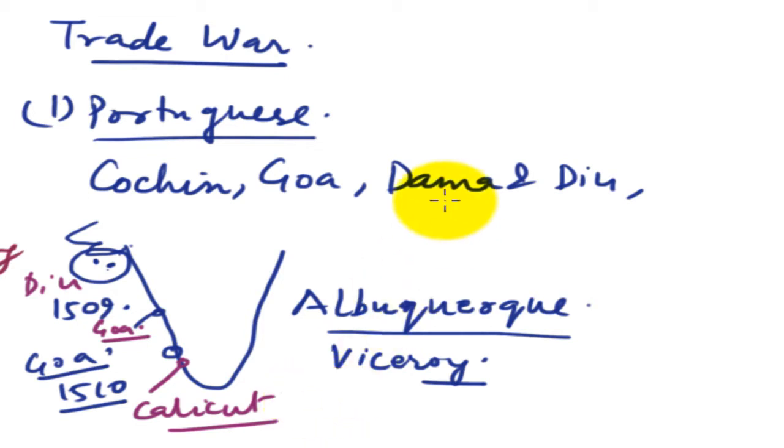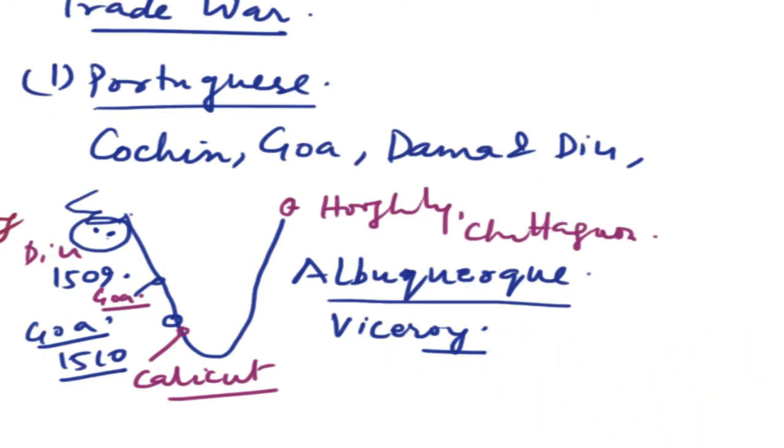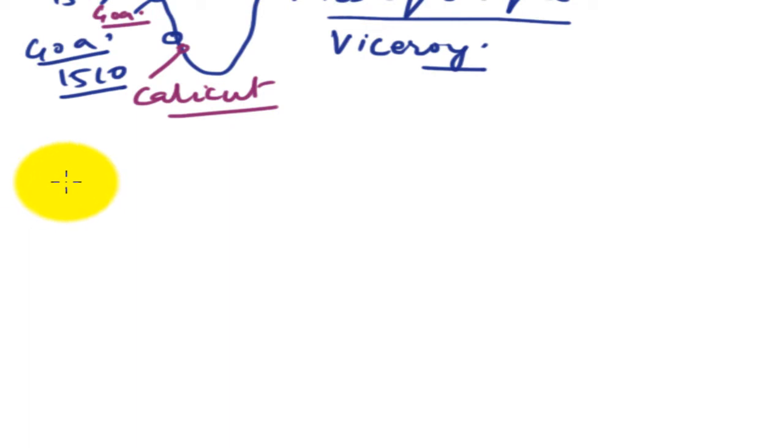They captured Calicut. Besides, they established control over Hooghly also. Hooghly, Chittagong. In the East, due to their superior, why they could become so successful? The reason was very simple, because of their superior armed forces.